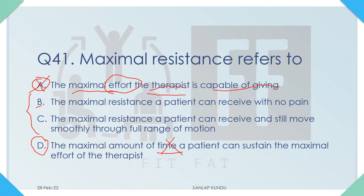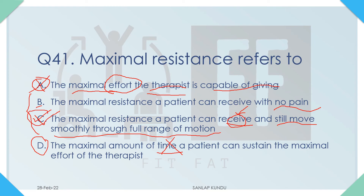That leaves Option B and Option C. Option B says the maximal resistance a patient can receive with no pain — it is only partially correct. So Option C is correct: the maximal resistance a patient can receive. The maximal amount of resistance is received by the patient and given by the therapist, but the key point is that the patient can still move smoothly through full range of motion. So the correct answer is Option C.